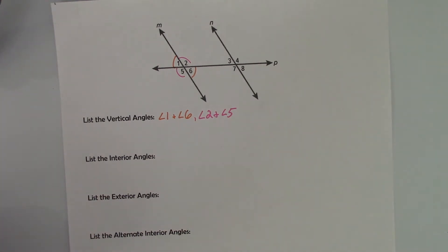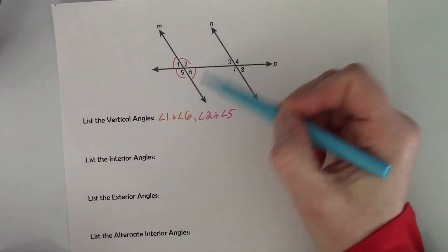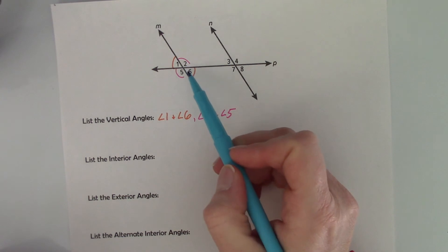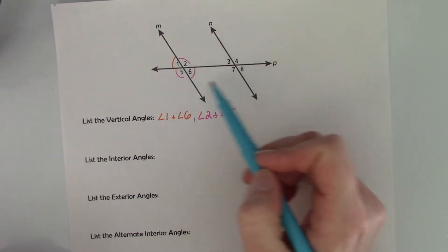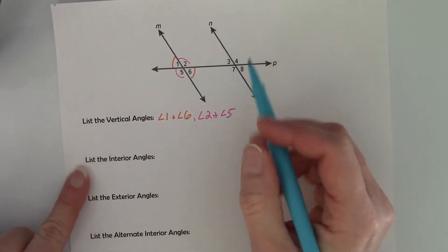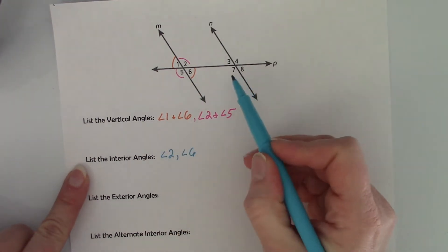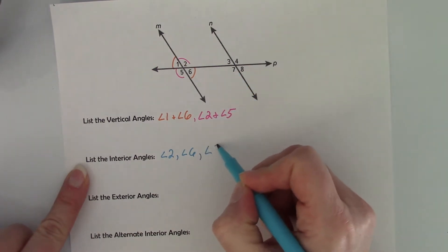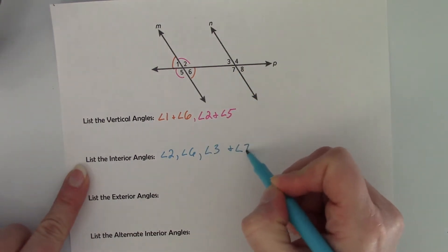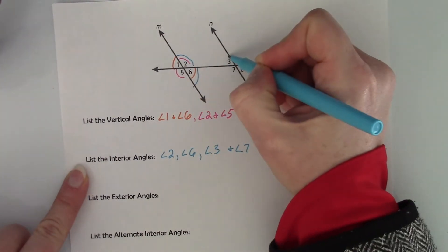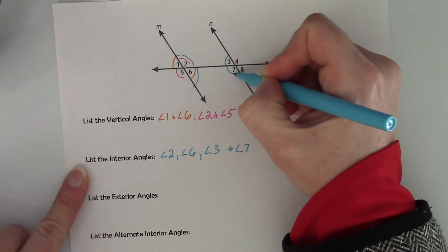Alright, now we're going to list the interior angles. The interior angles are all the angles that are between the two parallel lines, on the inside of these parallel lines. There are always going to be four of them, and they are angle 2, angle 6, angle 3, and angle 7. These are interior angles — there are four of those.